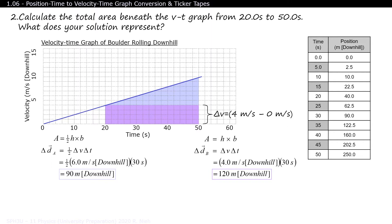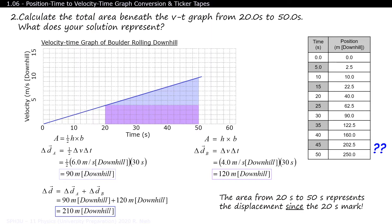When we add the area of the triangle with the area of the rectangle, we get a grand total of 210 meters. But when you look at the original data table, there is no 210. That's because the area underneath the VT graph does not tell you the position of the object. It only tells you its displacement. You'll have to subtract the positions at the 20 and 50 second mark to get to 210 meters.